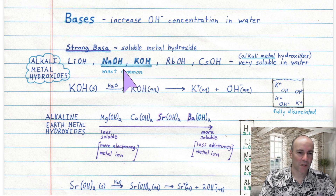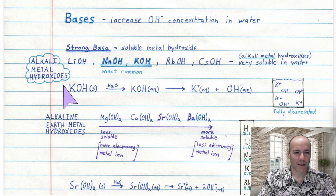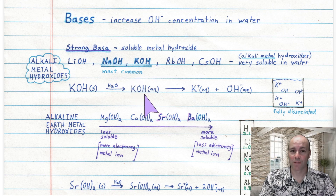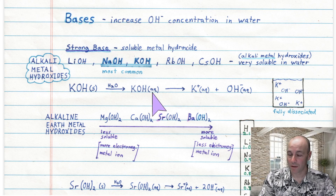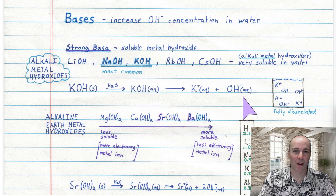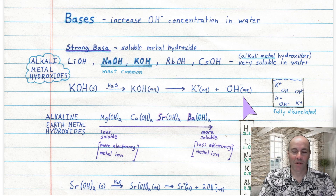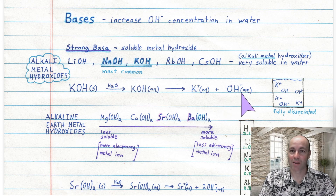Let's look at potassium hydroxide quickly. In pure form it is a solid, but when you put it in contact with water it dissolves as an aqueous solution. Like all ionic compounds dissolved in water, they are dissociated into their cations and anions. In this case the anion happens to be a hydroxide. So a strong base is just an ionic compound that dissolves in water where the anion is a hydroxide — in other words, a soluble metal hydroxide.